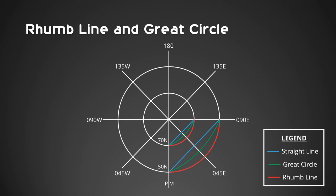The great circle is concave to the parallel of origin. Coincidentally, on the polar stereographic chart, the parallel of origin is the pole. That is why both rhumb line and great circle curve concave to the pole. As you may have noticed, the great circle at 70 degrees north is closer to the straight line than the great circle at 50 degrees north. Since polar stereographic charts are usually used for navigation near the polar region, a straight line on a polar stereographic chart can be considered as a great circle track for general navigation purposes.